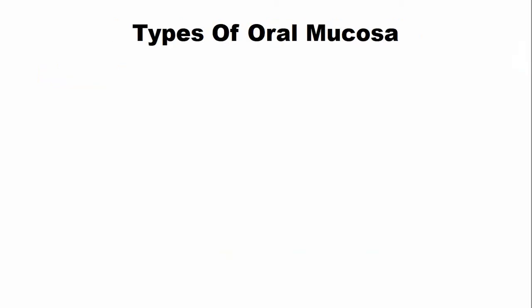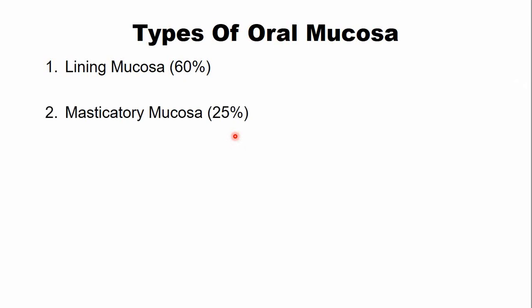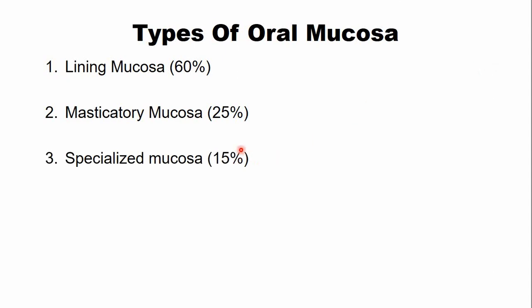Now we will discuss the types of oral mucosa. According to function, there are three types: the first is lining mucosa, which comprises about 60% of the oral mucosa; the second is masticatory mucosa, comprising about 25%; and the third is specialized mucosa, comprising around 15%.